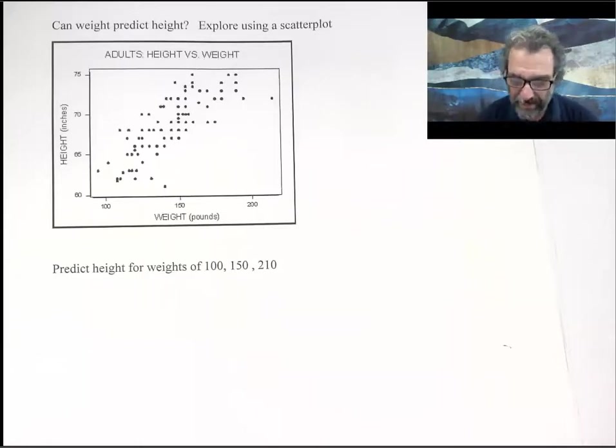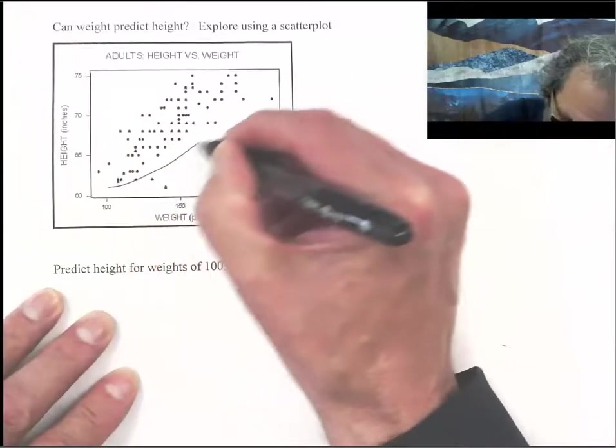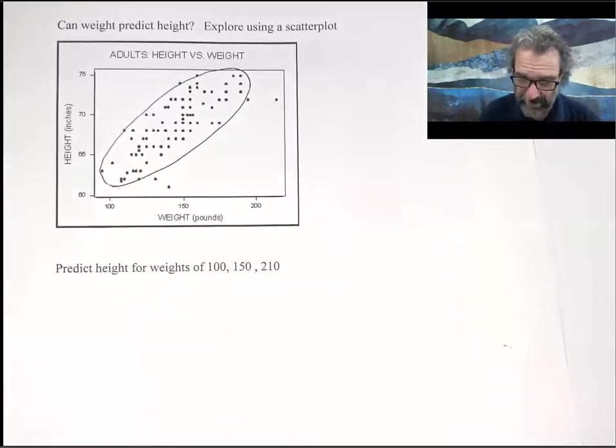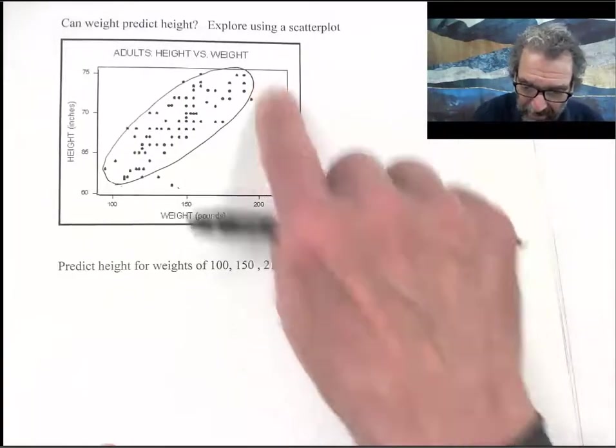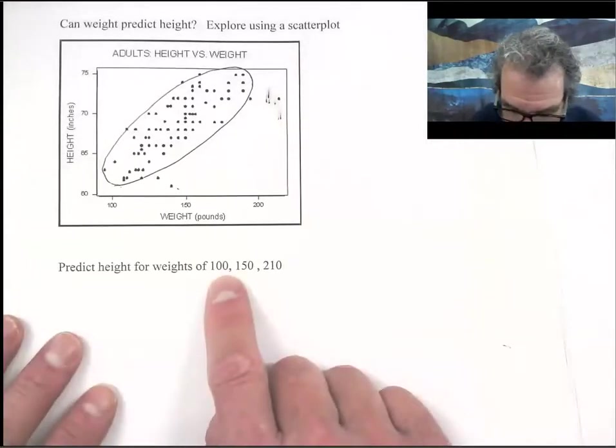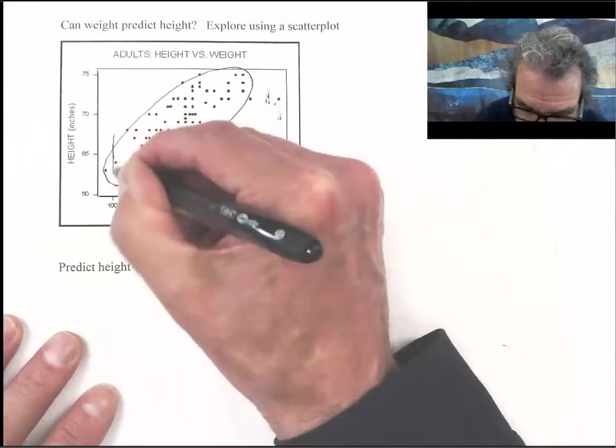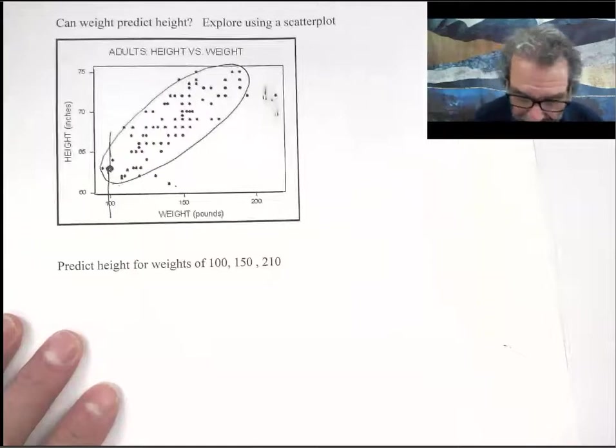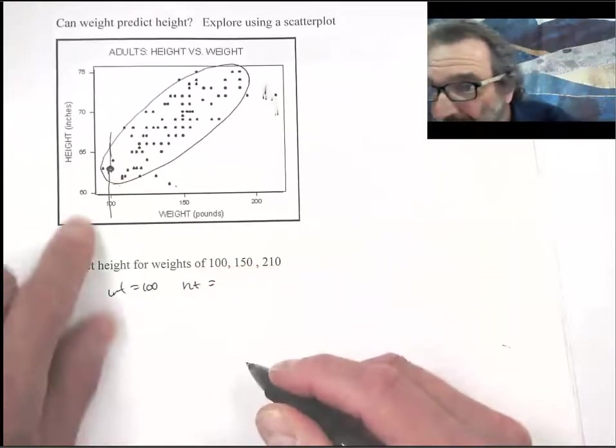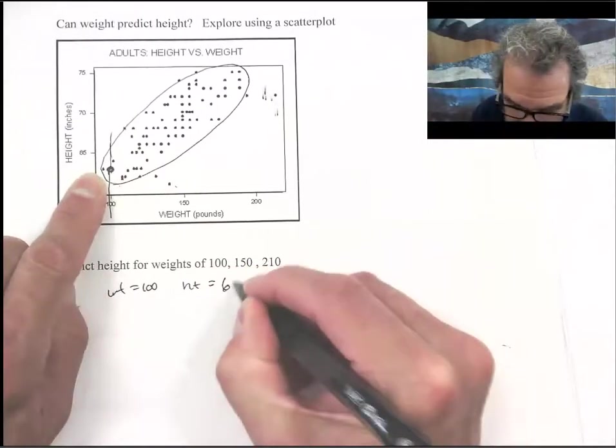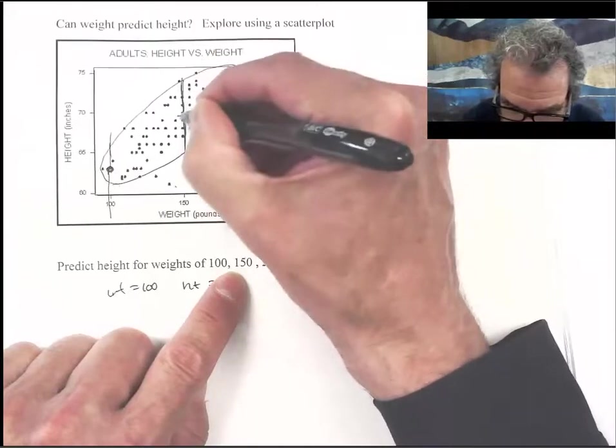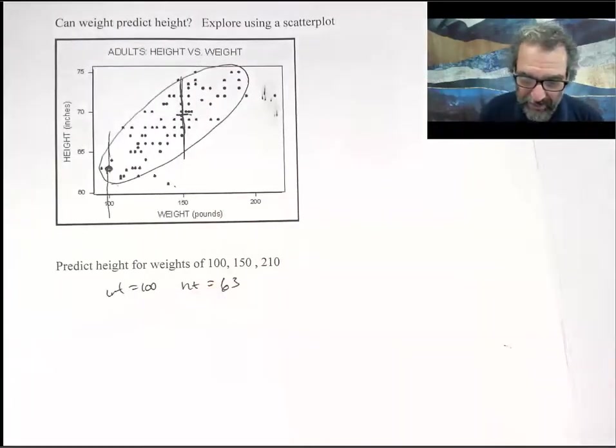A lot of times when you make scatter plots you'll see most of the values fall in like a big ellipse like this. There's some values that are outside that, but not very many. So if you're trying to make a prediction, you're going to use that ellipse to help you. Here with 100, which is here, you might say I'll pick that value for 100. Weight equals 100, height equals about 63. And then if we do 150, there's a pretty wide range, but we tend to just pick the middle as a guess of what we predict on average. Maybe that's 69.